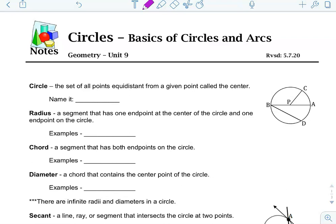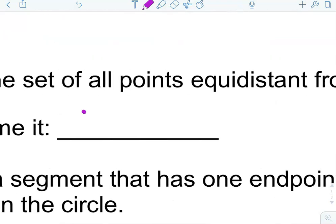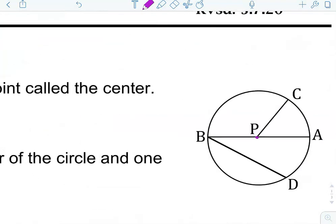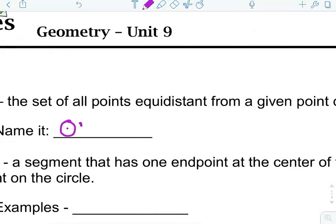A circle is a set of all points equidistant from a given point called the center. You have your center point, and it's equal distance all the way around. You might have seen this year how we name our circles — there's the little symbol for circle, and then you name it with the center. So this one over here to the right, the center is point P, so this would be circle P.